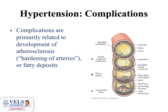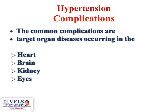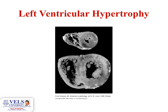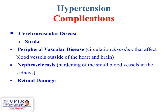Complications of hypertension are primarily related to the development of atherosclerosis — hardening of the arteries or fatty deposits into the arteries. Common complications involve target organ disease affecting the heart, brain, kidneys, and eyes. Hypertensive heart diseases include coronary artery disease, left ventricular hypertrophy (enlargement of the left ventricle), and heart failure. Other complications include cerebrovascular disease such as stroke, peripheral vascular disease, nephrosclerosis (hardening of small blood vessels in the kidneys), and retinal damage.